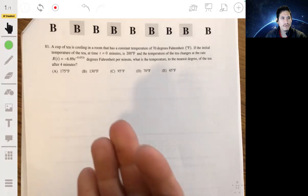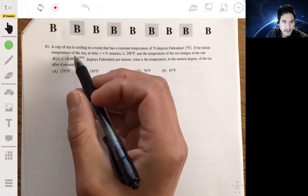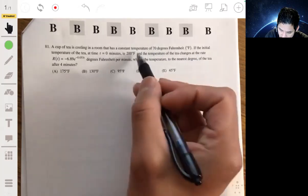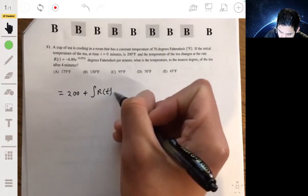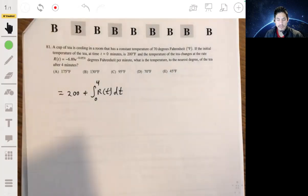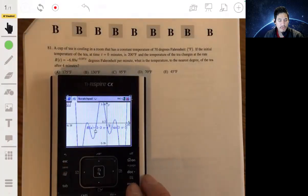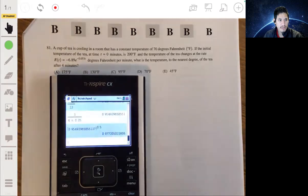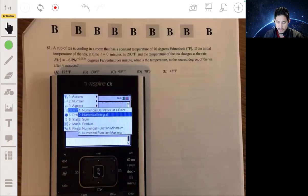We'll integrate the rate of change of temperature from zero to four and add it to the initial temperature which was 200. This equals 200 plus the integral of r of t from zero to four. Let's use our calculator. I'll go to the home screen and calculate the numerical integral.